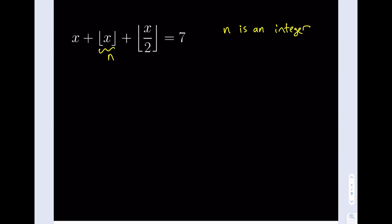And then what we're going to do is we're going to see what happens. So I'm going to try to isolate this floor of x over 2 here. That's going to give me 7 minus n minus x. Awesome.